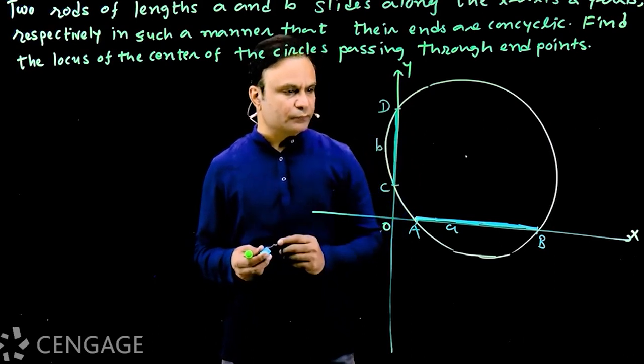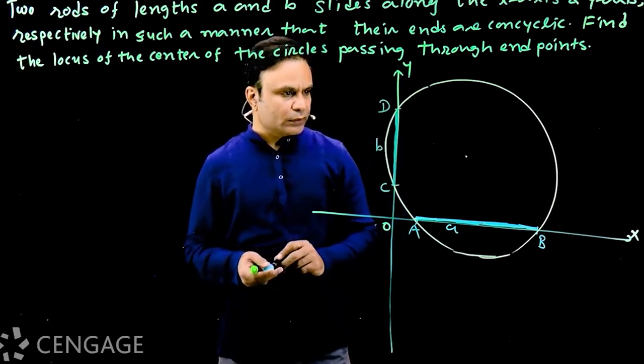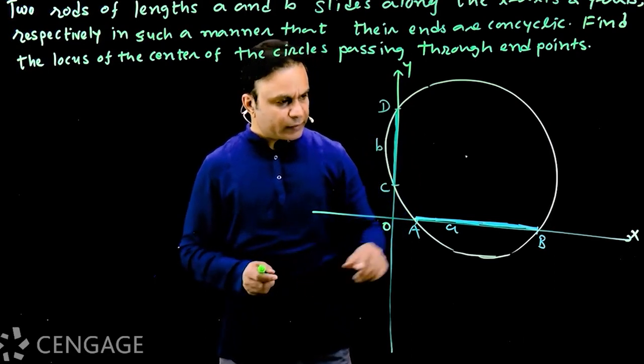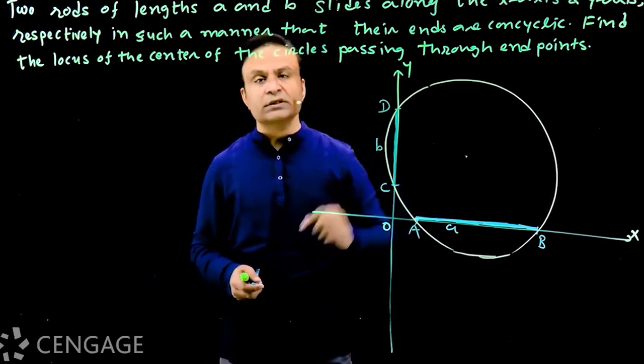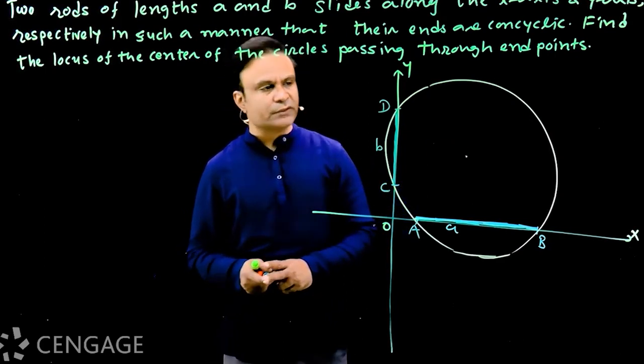And this rod of length b units is sliding along the y-axis. This is point C and this is point D; the length of this rod is b. We have to find the locus of the center of the circle.